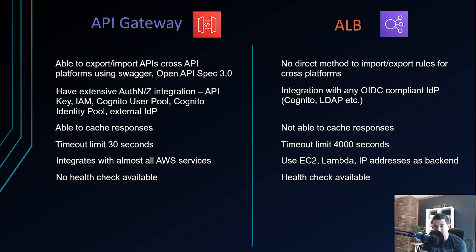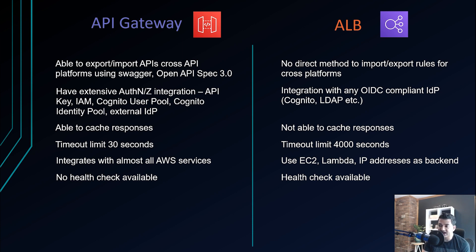API Gateway does not have built-in health checks — it won't periodically ping backend services to check if they're up. If you want health checks, you must implement them yourself, for example using a CloudWatch scheduled rule to ping a Lambda and verify responses. ALB, however, has health checks built in — it pings backend services and routes traffic away from unhealthy targets.